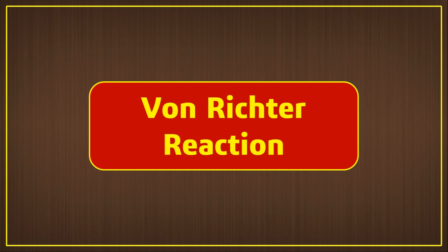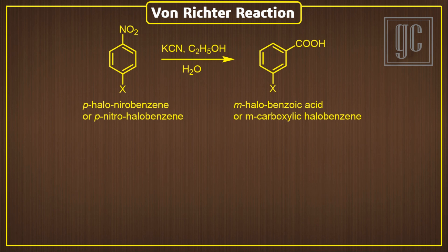In this video, we are going to discuss the Von Richter Reaction. Von Richter Reaction takes place in parahalonitrobenzene, and metahalobenzoic acid is formed as the final product. In this reaction, potassium cyanide is used as the nucleophile.